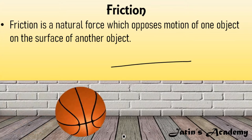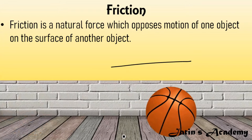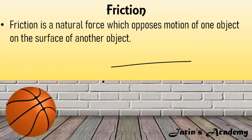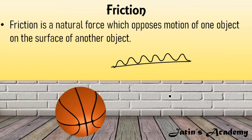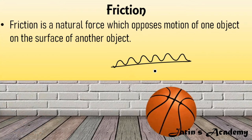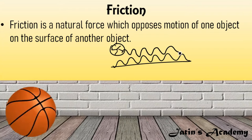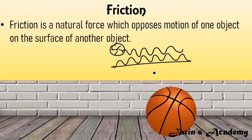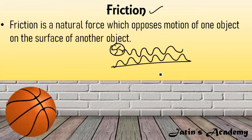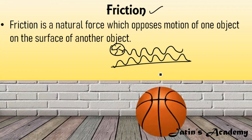How does friction happen? Any surface, even if it looks smooth, has irregularities at the microscopic level. The ball also has some roughness. When these two rough surfaces come into contact, their irregularities interlock with each other. This interlocking between the roughness of the two surfaces generates the frictional force, which slows down the motion of the object.